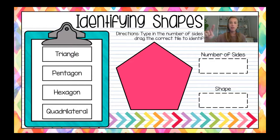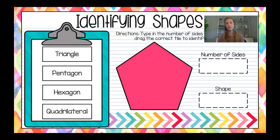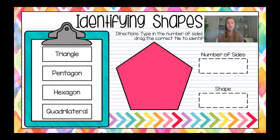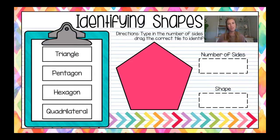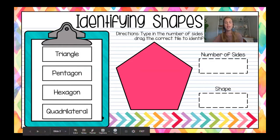Counting together: one, two, three, four, five sides. When we have five sides, we look at the prefix. Triangle has three sides — tri means three. Pentagon has five sides — penta means five, so that's our correct answer. Hexagon would be six sides, and quadrilateral is always four sides. So this shape is a pentagon with five sides.